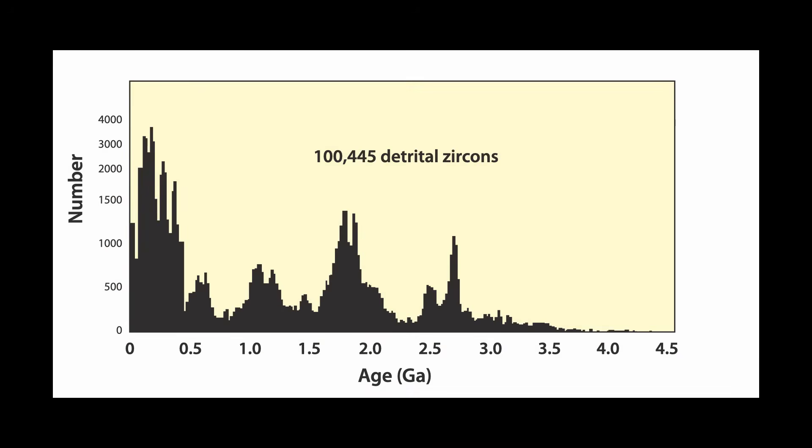This slide shows the crystallization ages of greater than 100,000 detrital zircons, modified from Hawksworth et al. 2016. The origin of the peaks and valleys on this plot are contentious, largely because they are difficult to interpret using crustal growth models where the bulk of crust is created by arc magmatism, as that is a continuous process and would not lead to the observed peaks and valleys.